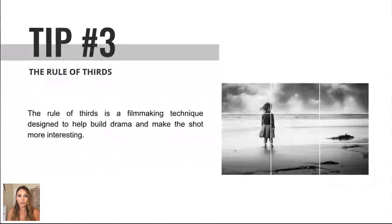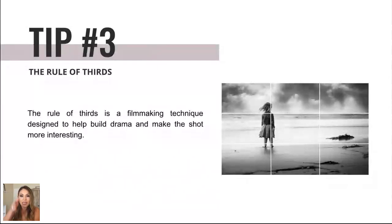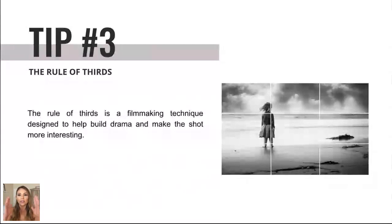Tip number three: the rule of thirds. This technique just works — it's designed to help build drama and make the shot more interesting. Imagine your viewfinder is divided into nine segments by two vertical and two horizontal lines. The rule of thirds says you should position the important elements of your scene along these lines — either to the left or to the right. The center is usually less interesting, though some outlets like CNN do use centered interviews. Placing subjects along those lines has a huge impact.